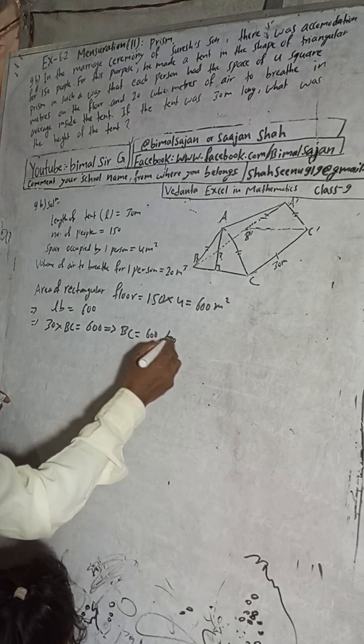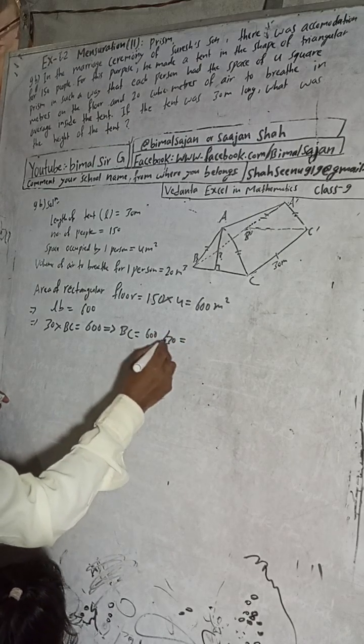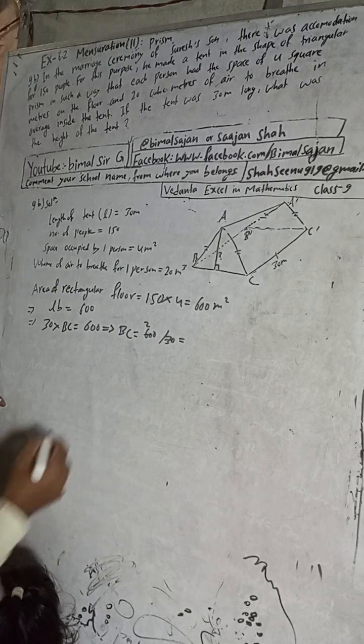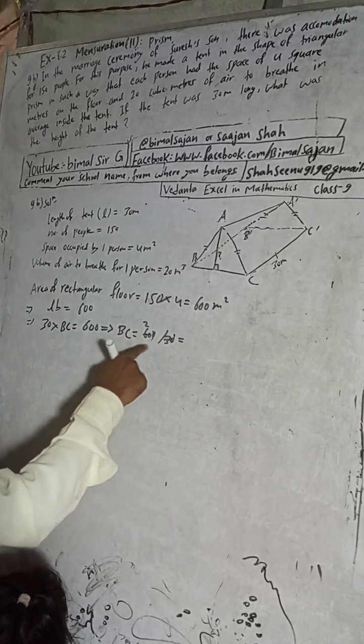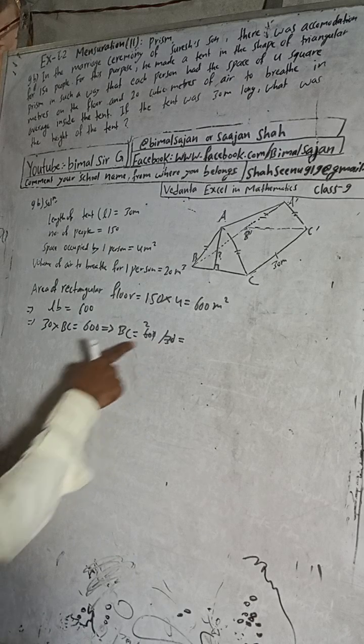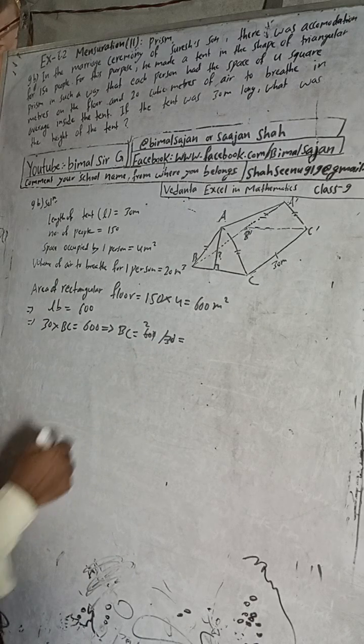So area of the rectangle of the floor, length into breadth, l into b is equal to 600. This implies length into breadth, this breadth is BC for this rectangle of the floor, BC is equal to 600.